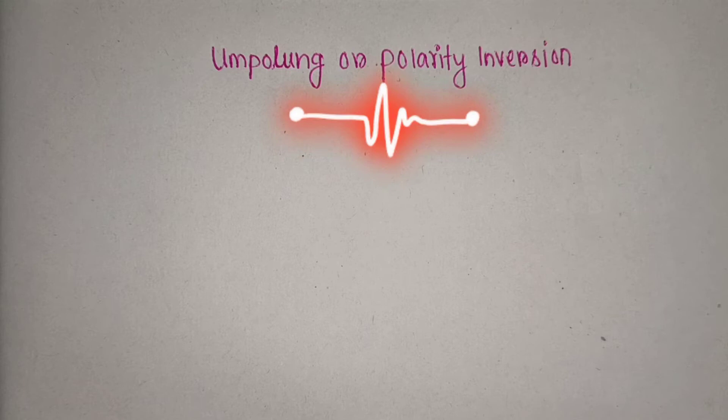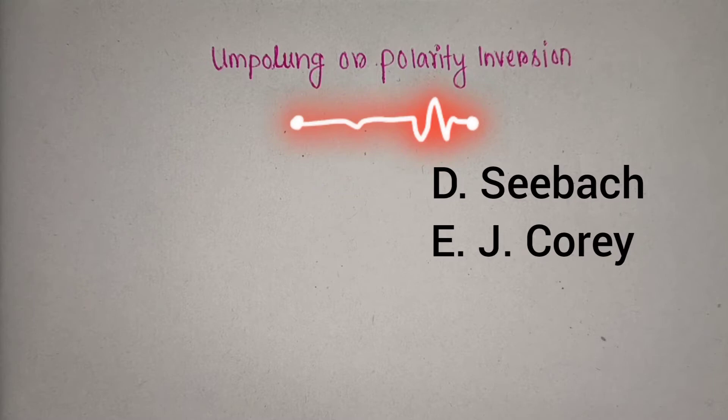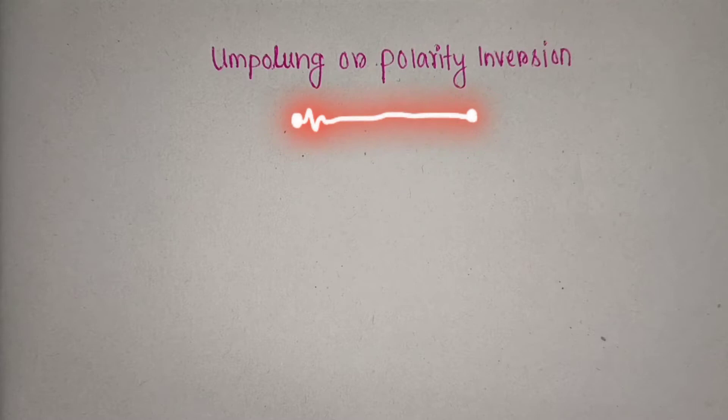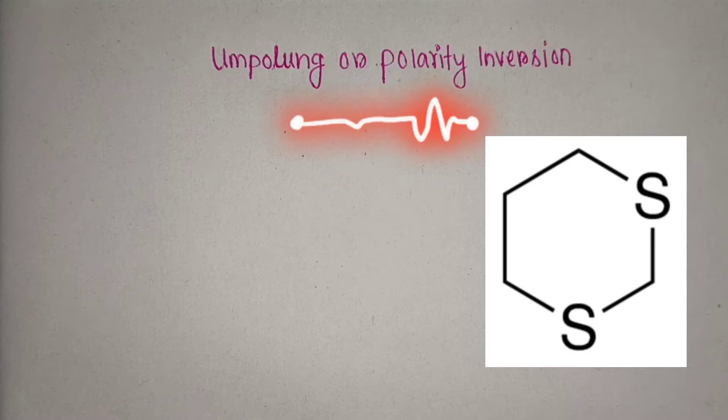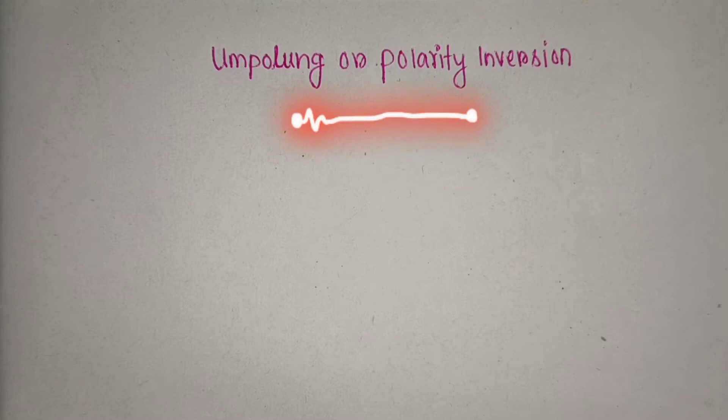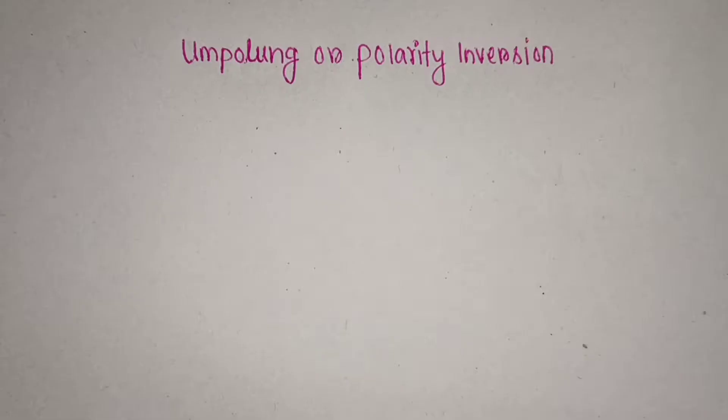Umpolang is a German word introduced by D. Seebach and E. J. Corey. Let's take an example of umpolang. Dithian chemistry is the classic example of polarity inversion, usually known as umpolang. So let's talk about the example.